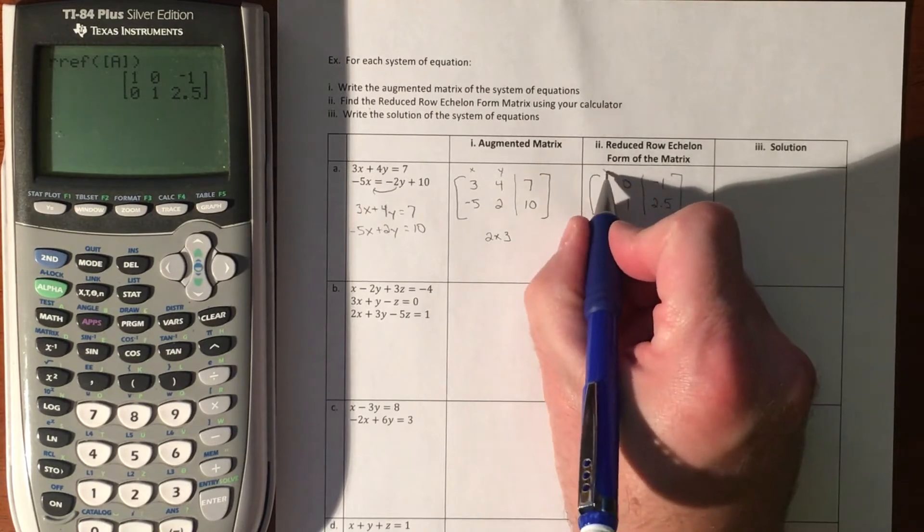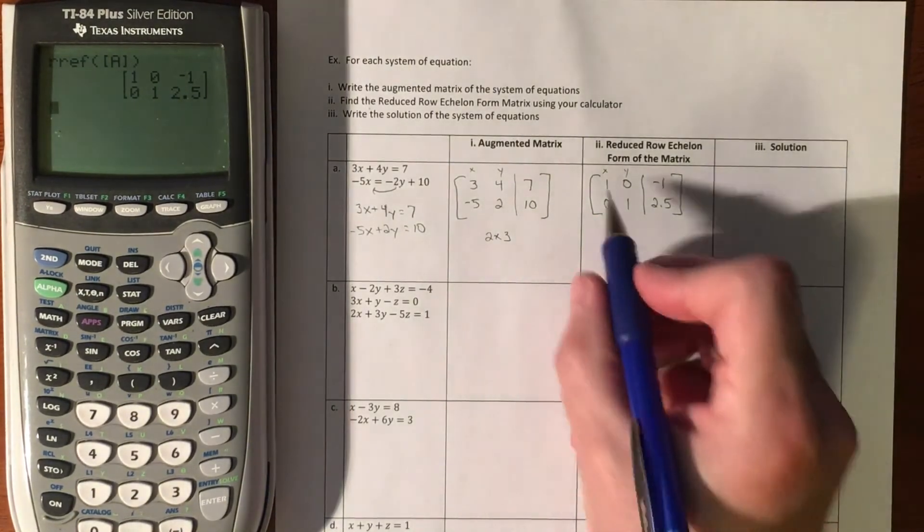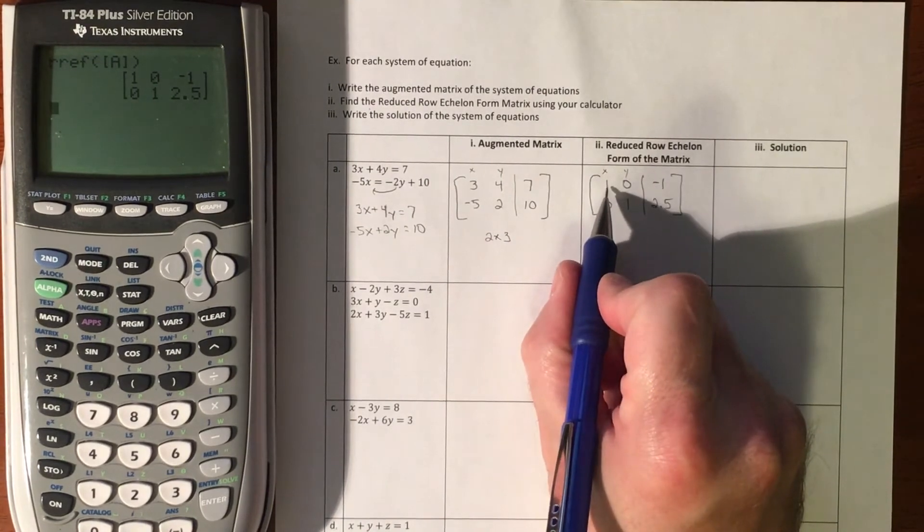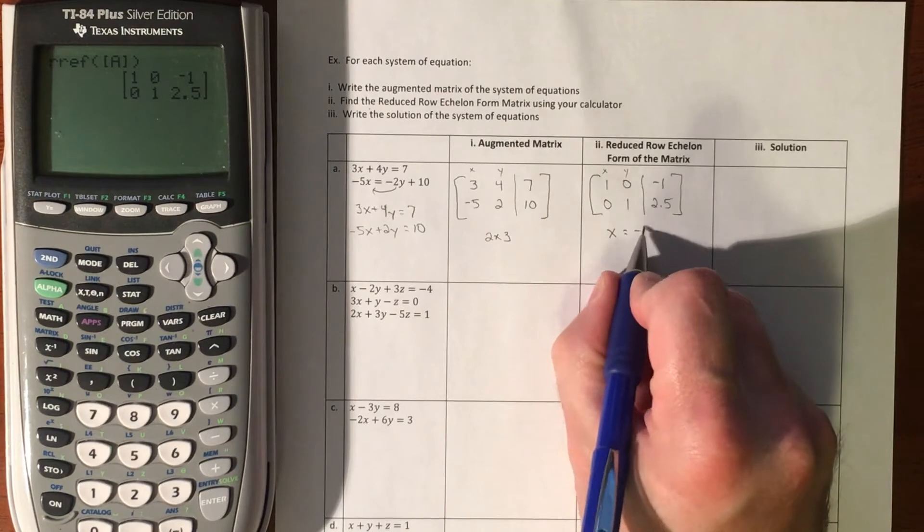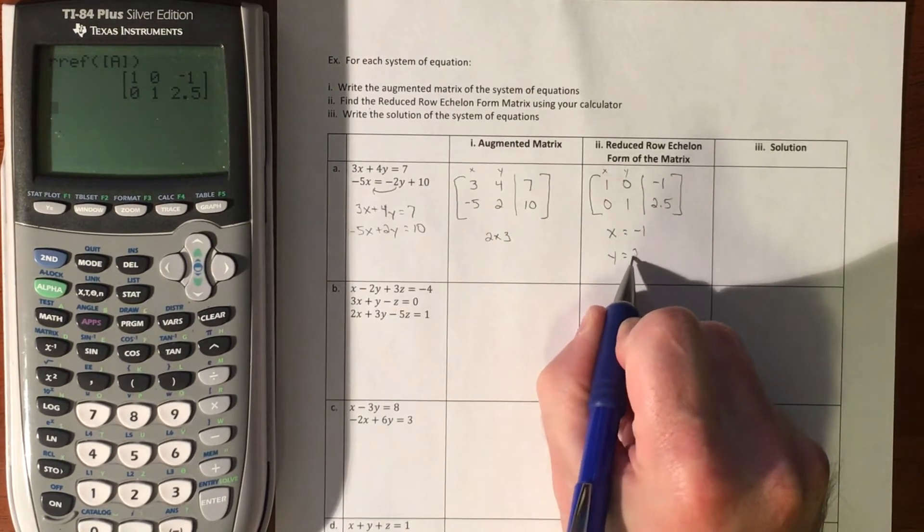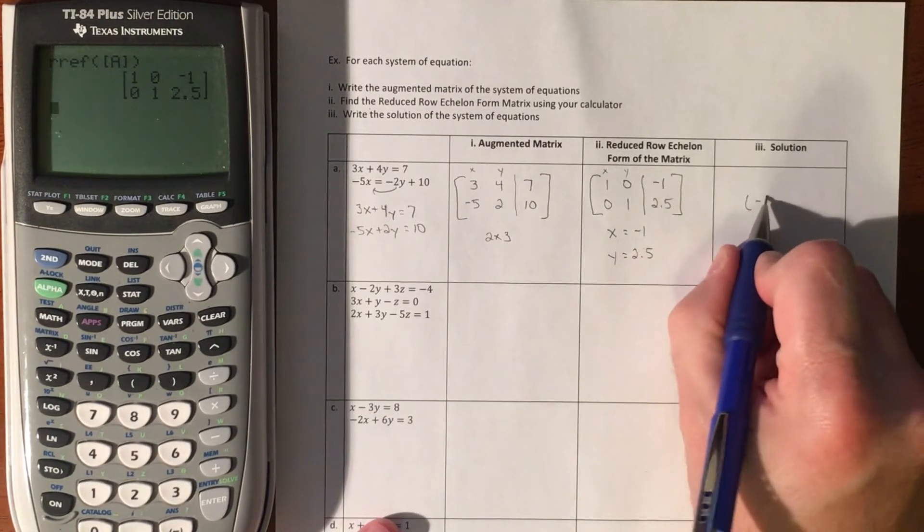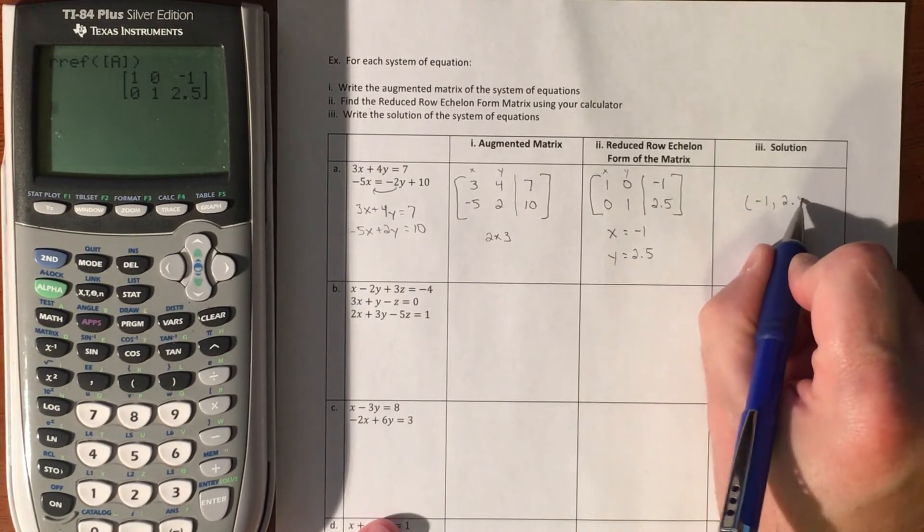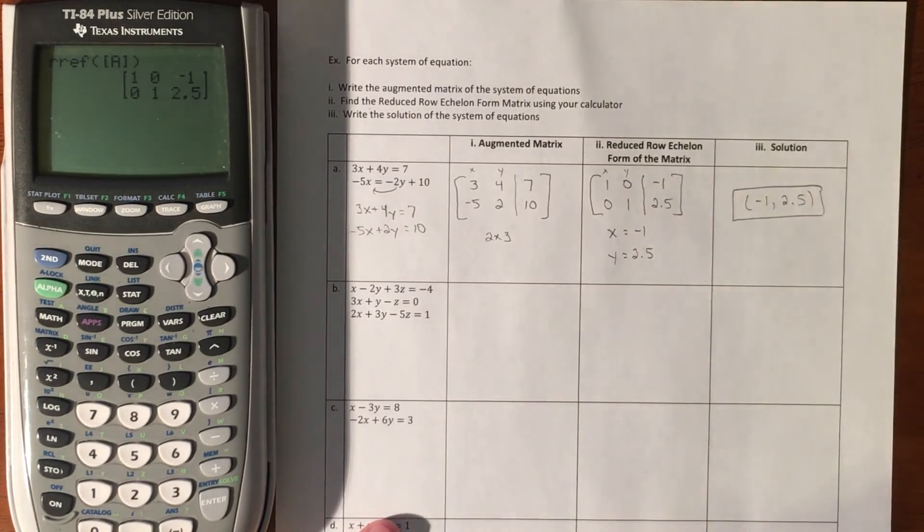This is your X column and this is your Y column. Don't forget that basically this X went away, so you just have X, and this is your equals negative 1. This is your Y equals 2.5. Literally, that's your answer: negative 1, 2.5. If you did elimination, substitution, or graphed it, that is the solution.